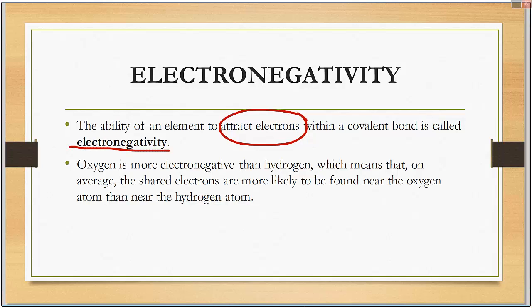Oxygen is more electronegative than hydrogen, which means that on average, the shared electrons are more likely to be found near oxygen than hydrogen. And that's all because oxygen is more electronegative.